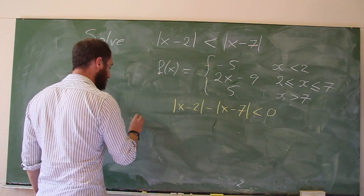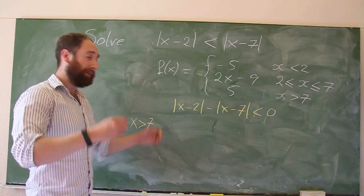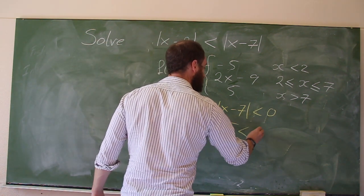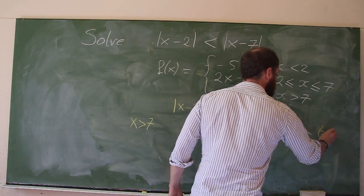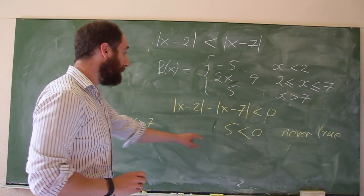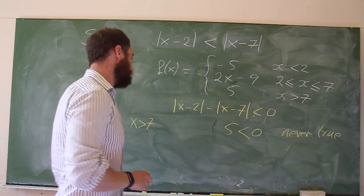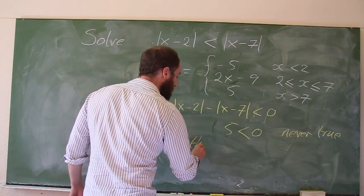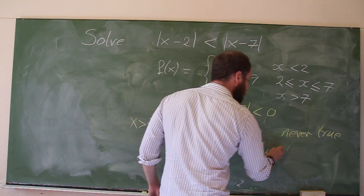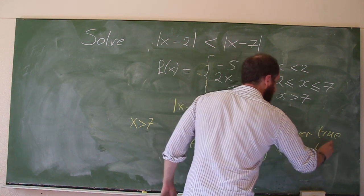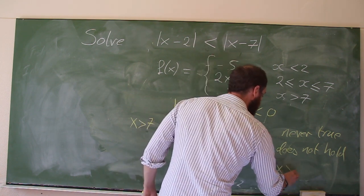Now let's look at x greater than 7. For that region the function value is 5. Is 5 less than 0? No. So the inequality does not hold for x greater than 7, because it gives us 5 less than 0, which we know is not true.